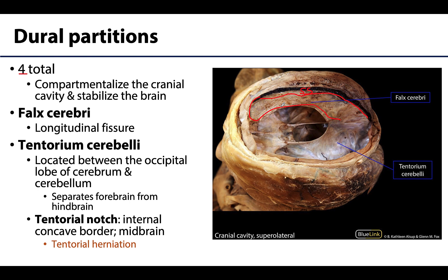The second largest dural partition is the tentorium cerebelli, seen here in a more transverse orientation with a similar component on the right side as well. The tentorium cerebelli will separate the cerebrum from the cerebellum — in essence separating the forebrain from the hindbrain. It also creates a notch referred to as the tentorial notch, which is the internal or anterior concave border of the tentorium cerebelli, and this is actually where the midbrain will sit.